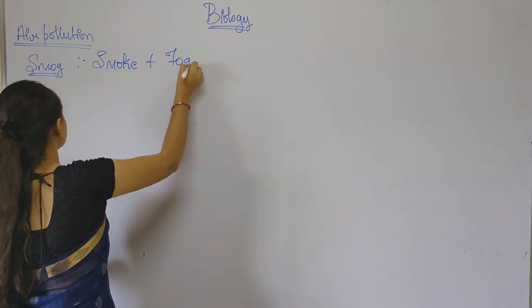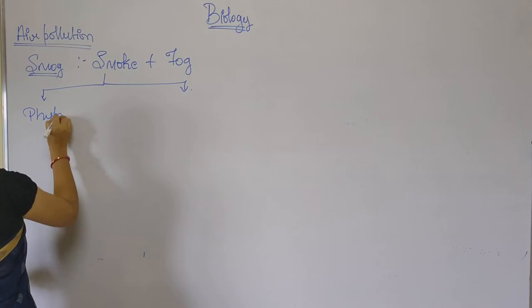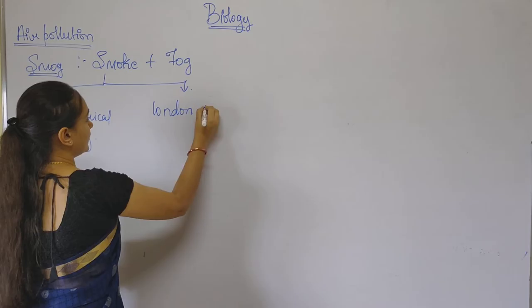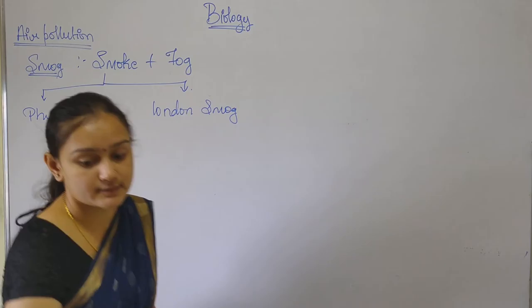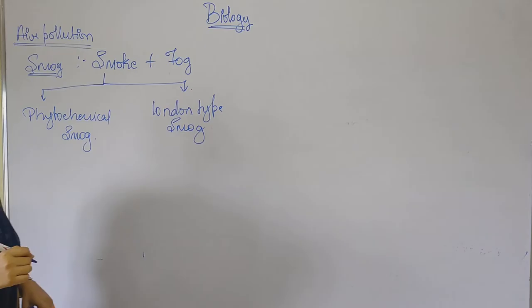We shall take the first pollutant, which is smog. Smog is a combination of smoke and fog. In smog, there are two types: one is photochemical smog and the other is London type smoke.